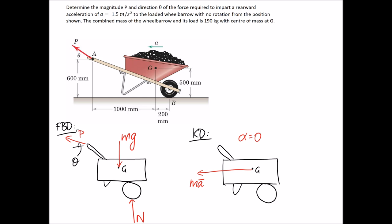Now we move on to the governing equations. The unknowns we're interested in are P and theta. We know the mass is 190 kilograms and the acceleration is 1.5, so we can work those out. The only other unknown is the normal force N. So we have three unknowns and three governing equations, which means we should be able to solve the system.